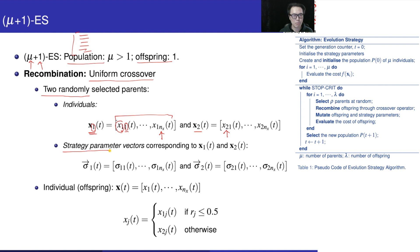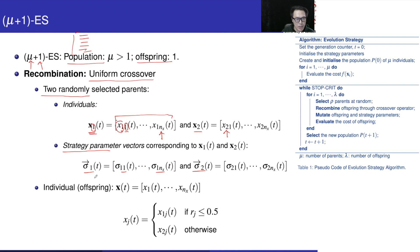The same notation applies to strategy parameters. Associated with x1, we have sigma1, which is the strategy parameter for the first parent, and sigma2 is the strategy parameter for x2. In the selection process, we have two parents ready for performing uniform crossover. Note that we have x1 as the first parent and x2 as the second parent. We are going to use their information to generate one offspring.